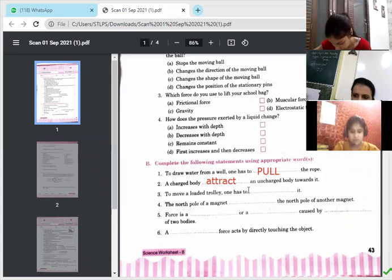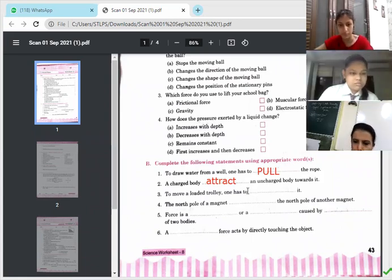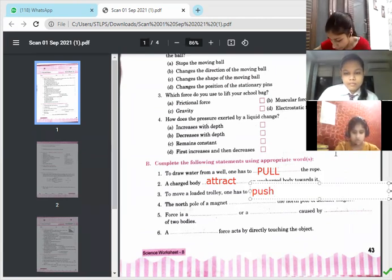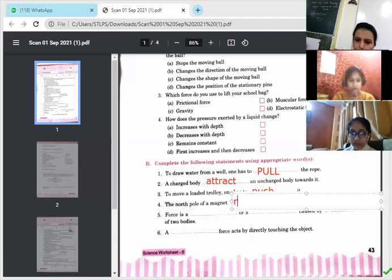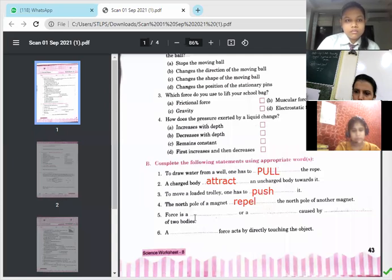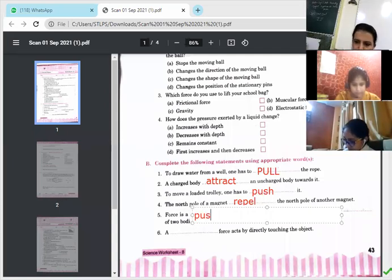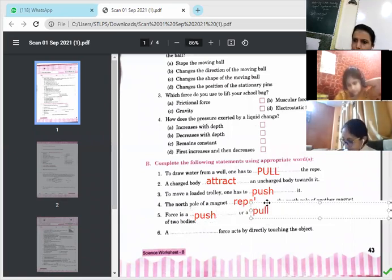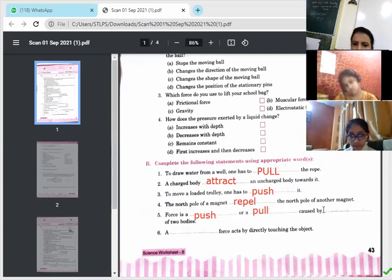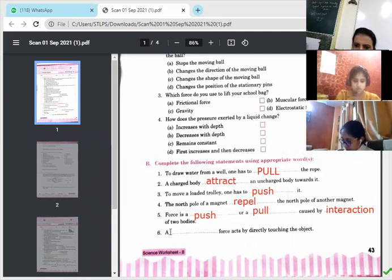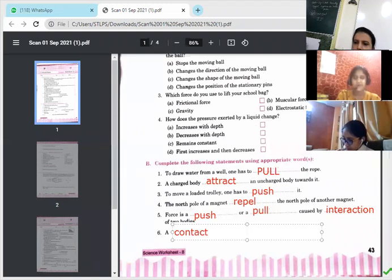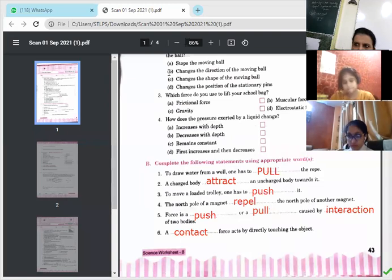To move a loaded trolley, one has to... pull or push? Push. You have to push it. A north pole of a magnet... dash the north pole of another magnet. Repel. Repel. Force is... push or pull. Caused by... dash of two bodies. Interaction of two bodies. A dash force acts directly touching the object. Contact force. Directly. That comes into play when we touch the object.